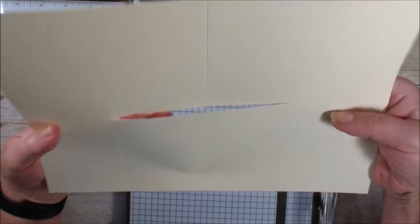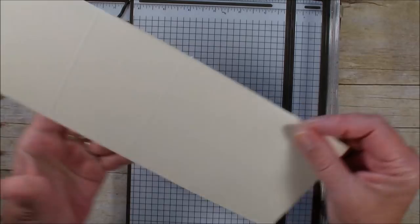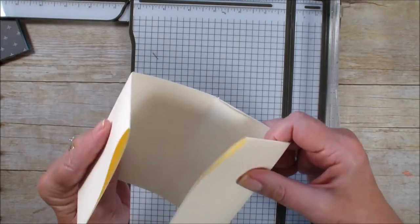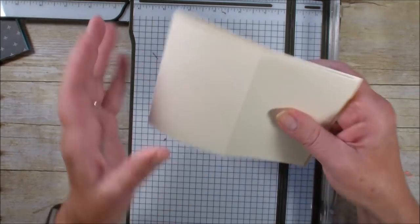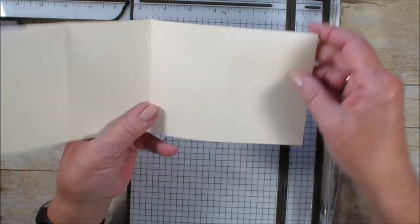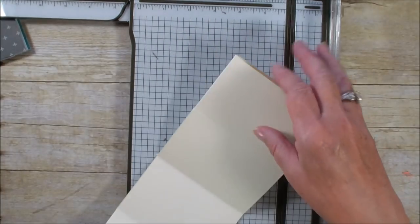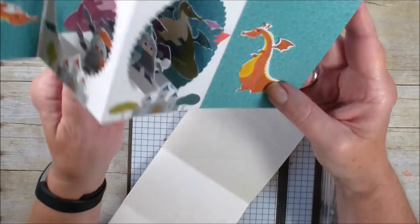So you have a piece that looks like this with a hole in the middle, and this is your card. It's going to measure the standard 4 1/4 by 5 1/2. But in order to get that window effect in the center, I'm going to bring in my Big Shot.